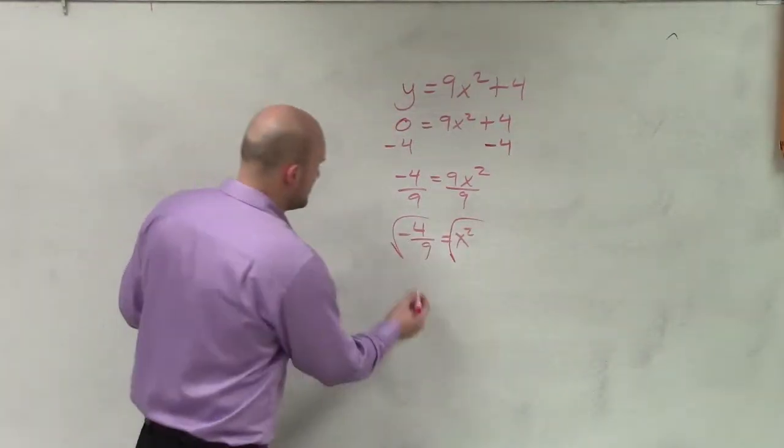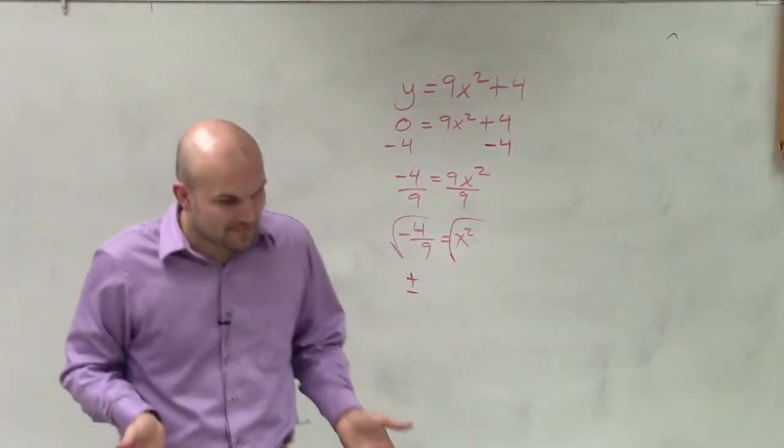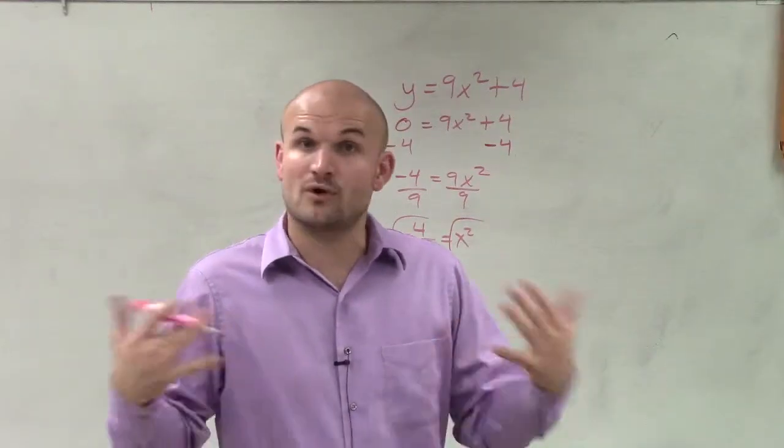First of all, when we take the square root of both sides, you have to make sure we introduce the plus and the minus. But now we have to take the square root of a negative number, which, depending on what class or course you're in, either does not exist or is imaginary.